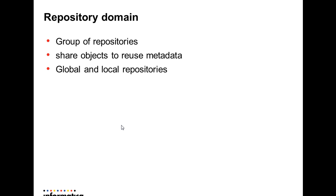We can save any metadata that we plan to share across repositories in the global repository. Local repositories can then use shortcuts to objects in the global repository's shared folders. When we configure shared folders in a repository, we can share the objects in the folder with other repositories in the repository domain to reuse metadata.